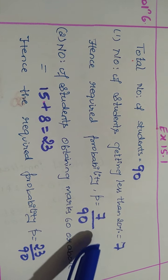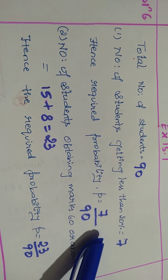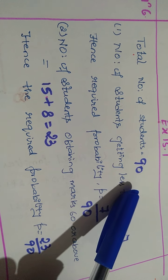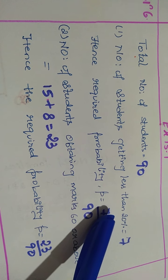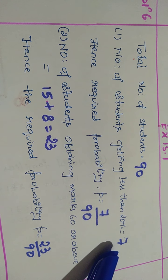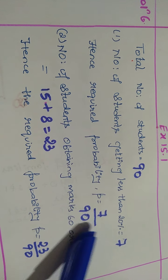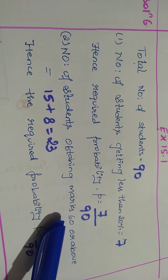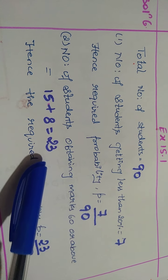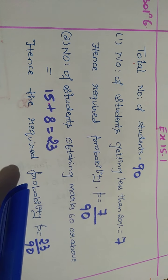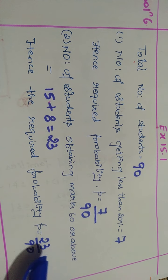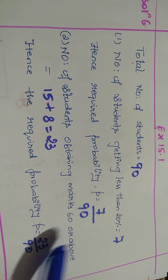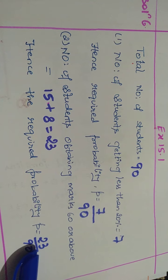So, here is the solution for your question number 6 children. Total number of students were 90. Students scoring less than 20% were 7, so required probability is 7 by 90. Again, the students scoring 60 and above — 15 plus 8 is 23. Hence, the probability is 23 by 90. As both are prime numbers, we can't cancel them.